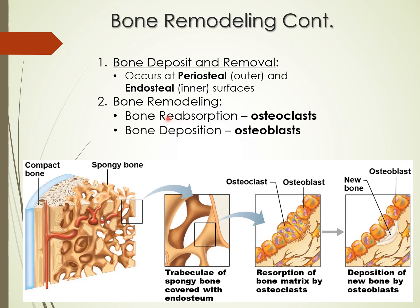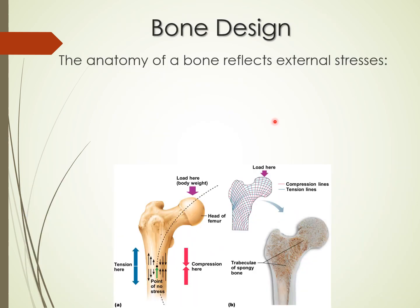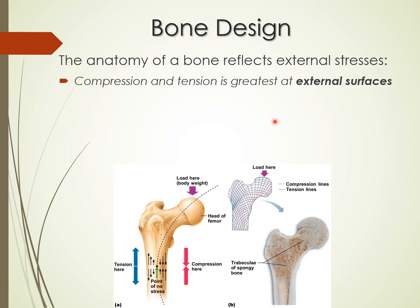Bone remodeling is a constant process on the periosteal and endosteal surfaces. Osteoclasts perform bone resorption — they break down bone matrix. Then osteoblasts come in for bone deposition, laying down new bone matrix. If you blow up a trabeculae surface, you see osteoclasts dissolving bone matrix and osteoblasts filling in new bone matrix.